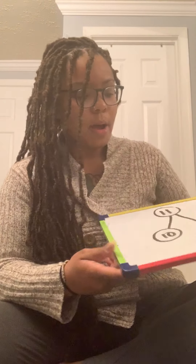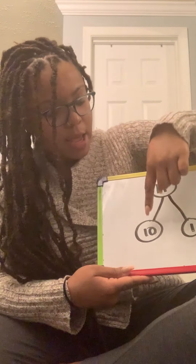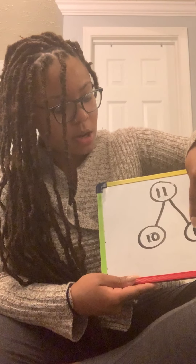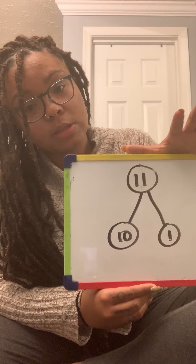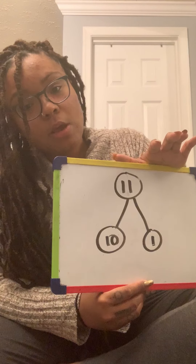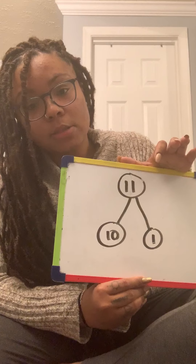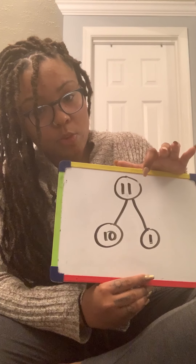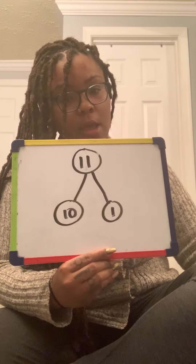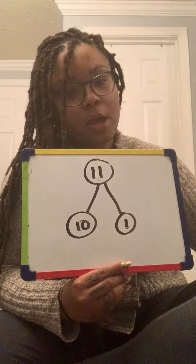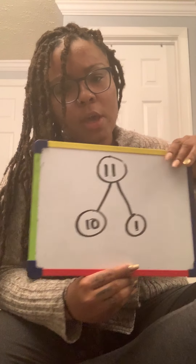So, in our number bond, I know that my whole is 11, and 10 plus 1 equals 11. Since we've been focusing on 10s and 1s in our base-10 unit, we're going to be making number bonds using 10s and 1s. In 11, there is one 10 and one 1. Now, who can remember why do we call this a 10?